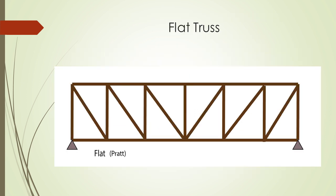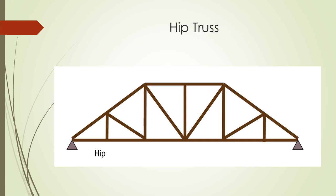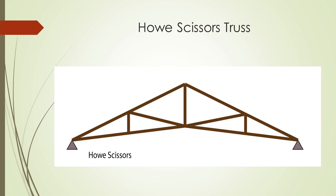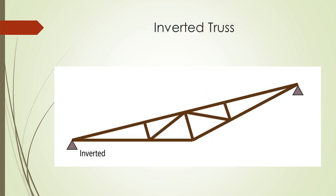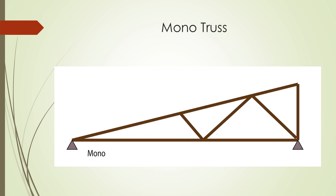Common roof truss shapes include: Flat Truss, Gambrel Truss, Hip Truss, Howe Scissors Truss, Inverted Truss, King Post Truss, and Mono Truss.